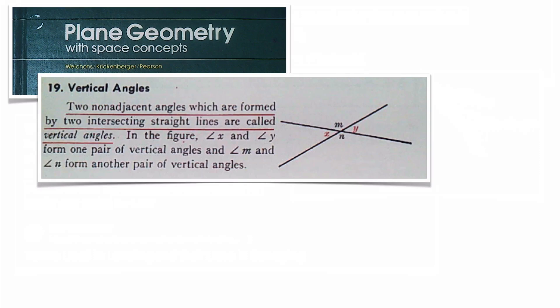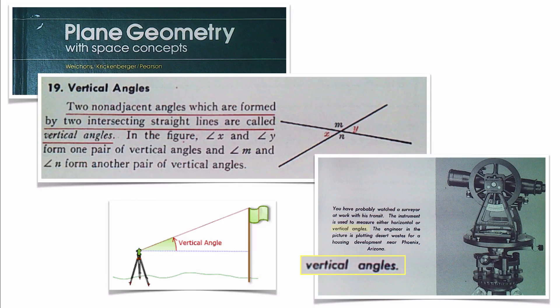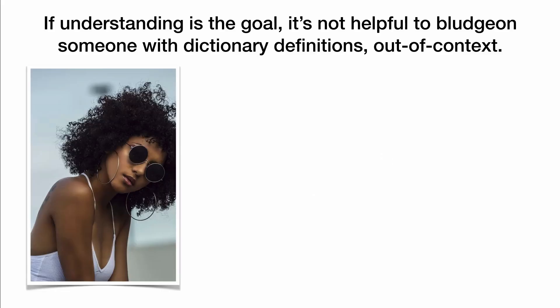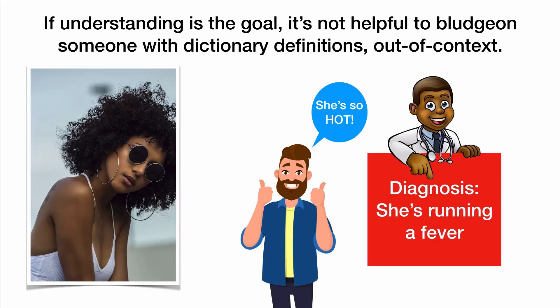Remember when we looked in the textbook for plane geometry, we saw the traditional definition of vertical angles, two pairs of which are formed when two lines intersect. Then later in that same book, it talked a bit about surveying with a transit, and it used vertical angles in an entirely different manner. Two definitions, one term. This is why, if understanding is the goal, it's not helpful to bludgeon someone with dictionary definitions out of context. Upon seeing a pretty girl, Mike says she's so hot, which leads to a medical diagnosis of running a fever. Take some Motrin and drink plenty of liquids.